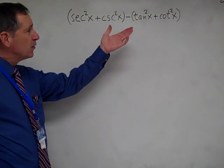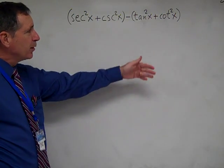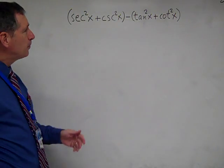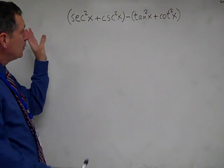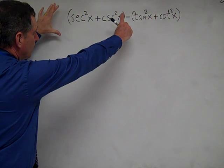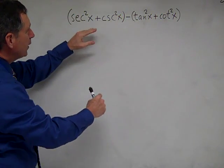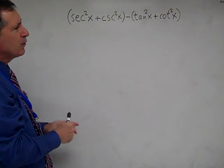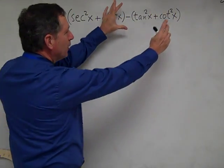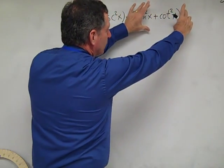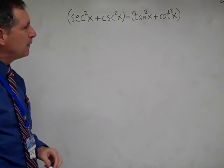We're going to attempt to simplify this algebraic expression: the quantity secant squared x plus cosecant squared x, minus the quantity tangent squared x plus cotangent squared x.